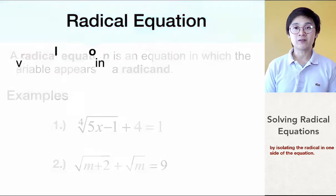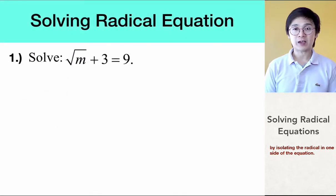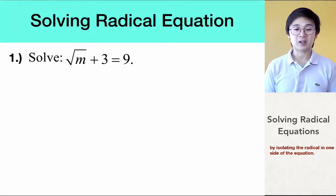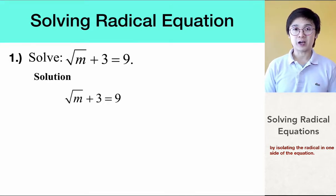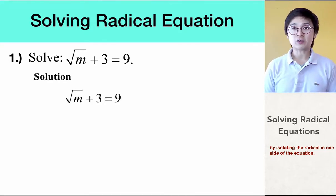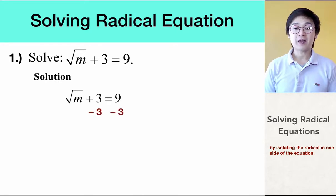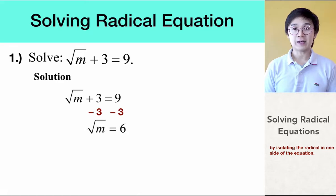Now, let's solve a simple radical equation to find the value of the variable. In this particular example, our first problem is giving us square root of m plus 3 is equal to 9. To find the solution, we need to have m by itself. To do that, we're going to isolate the square root of m by subtracting 3 on both sides, ending up with square root of m is equal to 6.